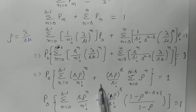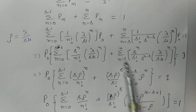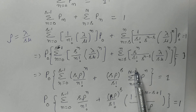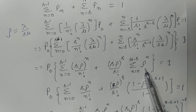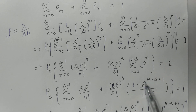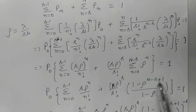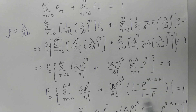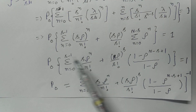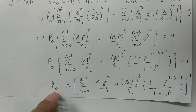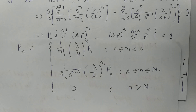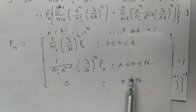After simplification, the second sum becomes a finite geometric progression with ratio ρ, summing from 0 to N−S terms, giving (1 − ρ^{N−S+1})/(1 − ρ). Therefore P_0 is the inverse of the full expression. These are the required values: P_N for N less than S, P_N for S less than or equal to N less than or equal to capital N, and the corresponding P_0.